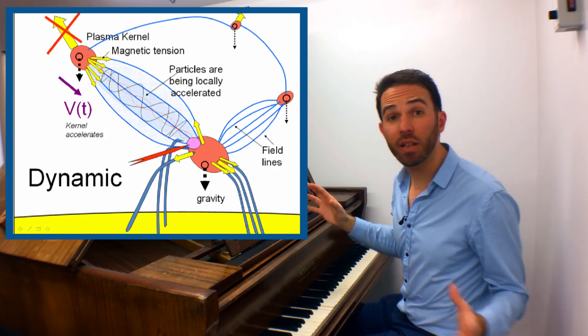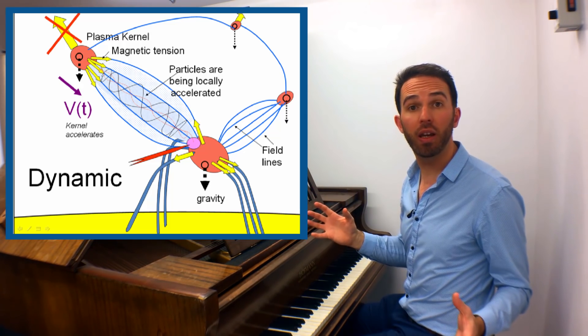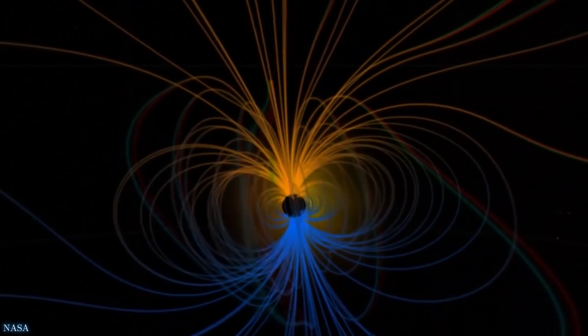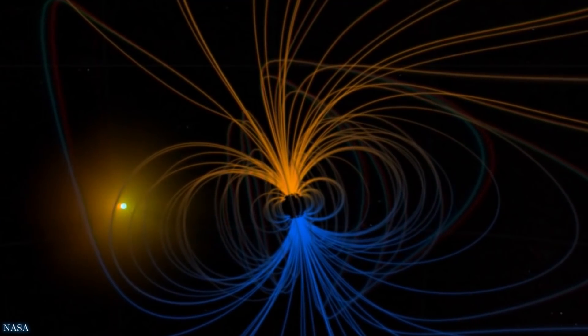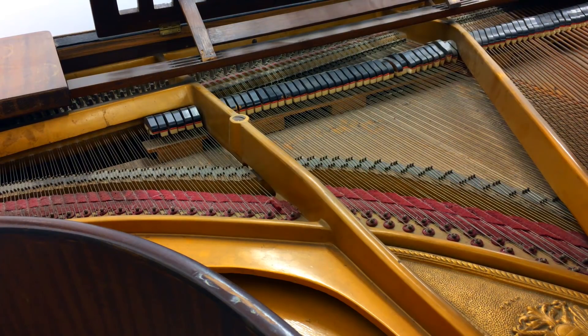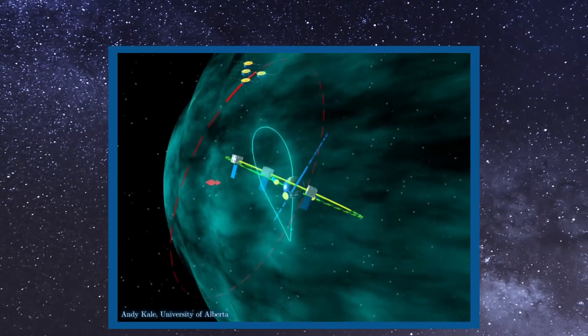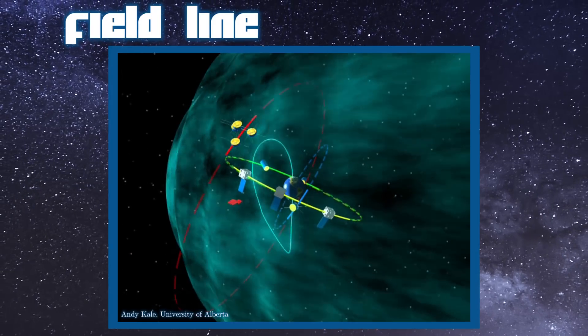Remember that a magnetic field line can be thought of as something like a string under tension. And these field lines are fixed where they meet Earth's ionosphere at both the northern and southern ends, just like you have in a piano or guitar. So we can have standing waves of these field lines known as field line resonances.